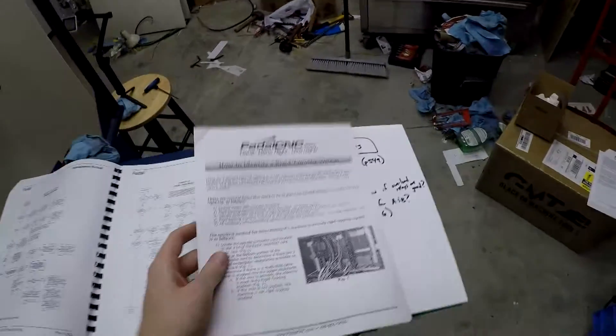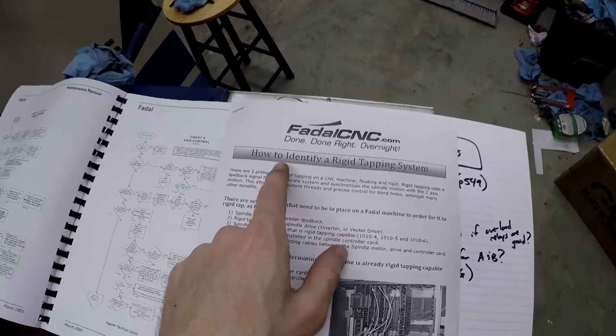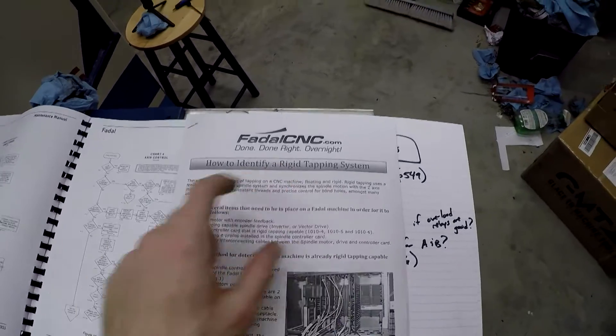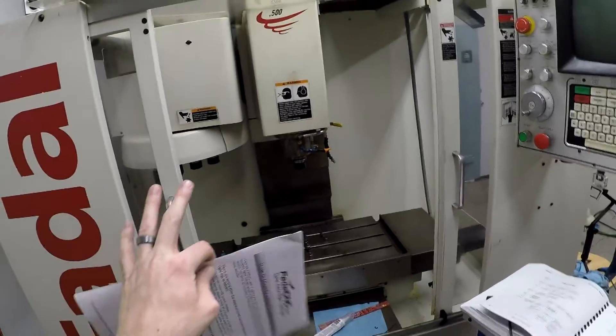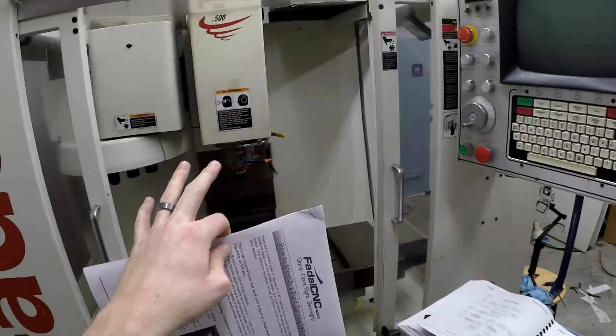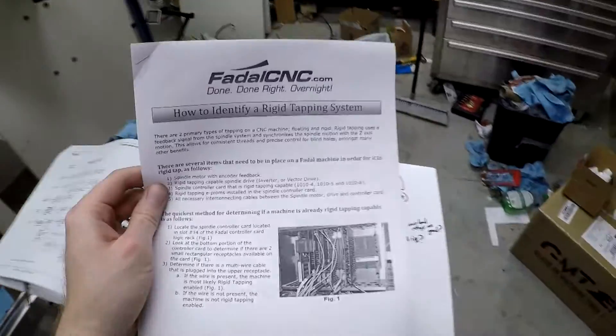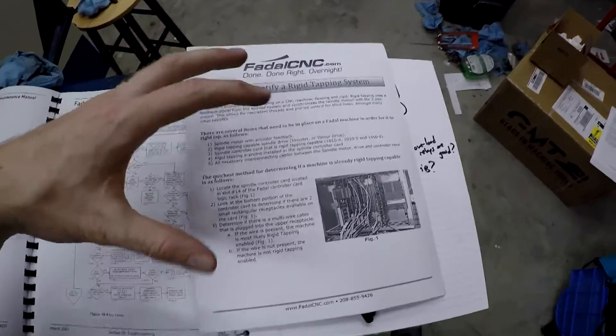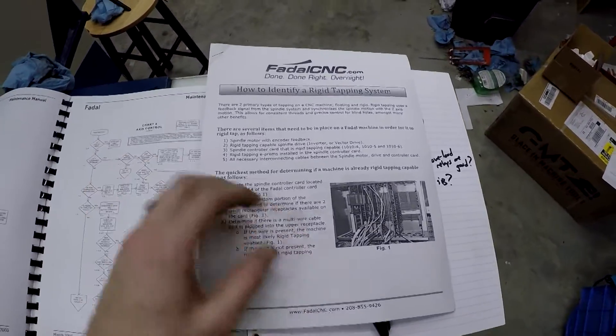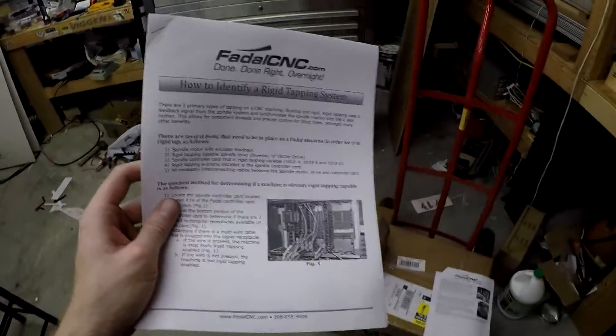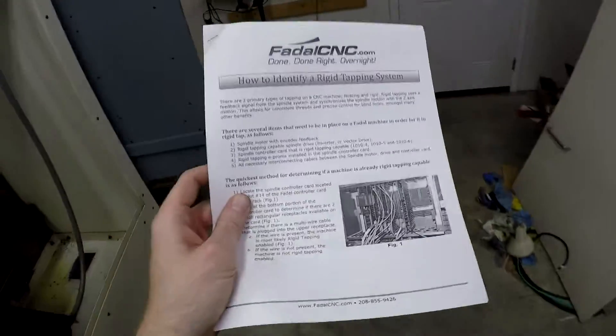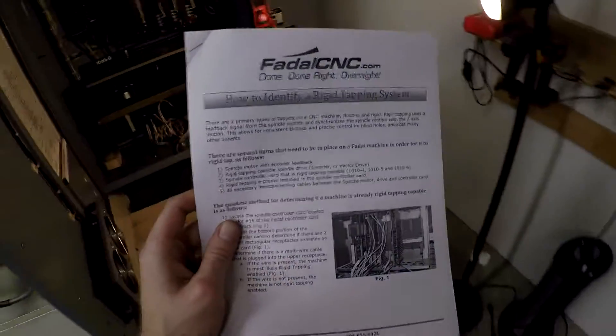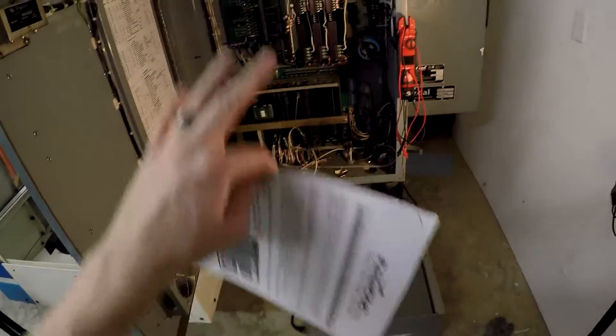It's from Fadal CNC and it's basically how to identify if your machine has rigid tapping. And one thing I didn't know was not all Fadals come with rigid tapping. So I went through this and I want to at least share it to see maybe someone else could benefit from this. But I'll put a link to this in the description below. It's basically a step by step guide to check if your machine has rigid tapping.